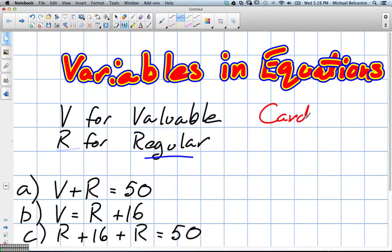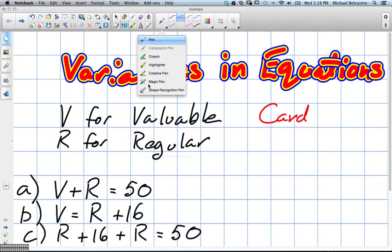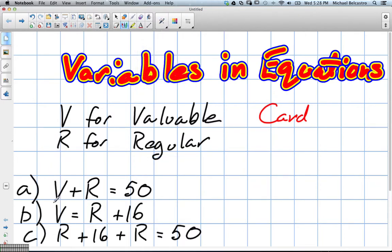Valuable cards and regular cards. Yeah, we're talking about somebody's card collection, right? And they've given us a whole bunch of information about it. They've told us that V plus R is equal to 50. So what does that mean? Valuable cards plus regular cards equals 50 cards. Perfect, excellent.